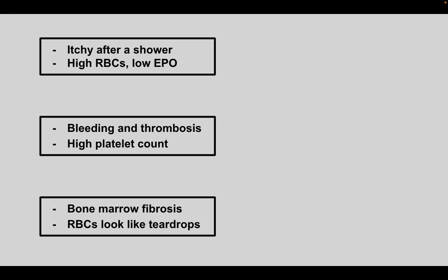Next is a patient that feels itchy after a shower. They have high red blood cells and low EPO. This is polycythemia vera. Remember, this is associated with a JAK2 mutation.